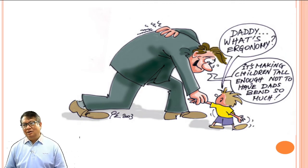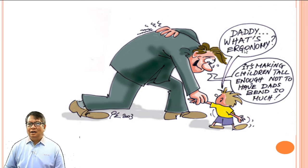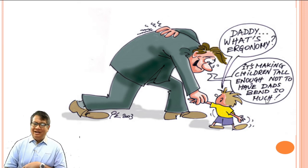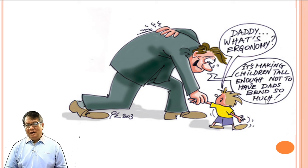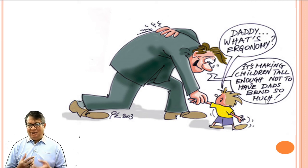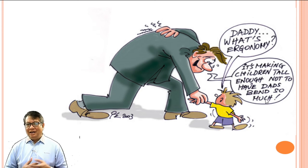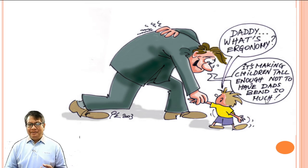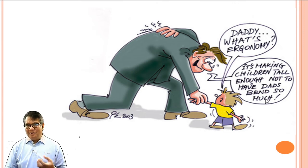There is a caricature here where a child asks, 'Daddy, what's ergonomics?' and the father says, 'It makes making children tall enough not to have dads bent so much.' The humorous point is that it's easier to make the child grow than to always bend down. Bending down all the time results in stress, posture damage, and body effects — because the normal position when walking should be straight. Good posture protects the body's supports — our bones — from damage.